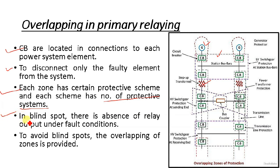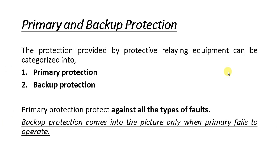When talking about the blind spot, there is an absence of relay output under the fault condition. To avoid blind spots, overlapping of zones is provided. When overlapping is done, the number of blind spots decreases. We can say that the protective zones are so designed that no area remains unprotected. When we decide on protective zones in a power system, our main criterion is that blind spots should be reduced for the complete protection of our power system.